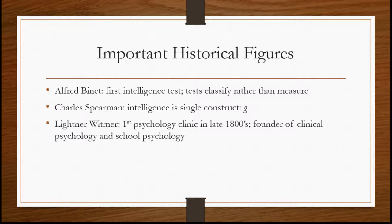I wanted to go over a few important historical figures. The first person who seems to have put together a psychological test is Alfred Binet, who worked in the Paris school system in France in the late 1800s and early 1900s. He came up with one of the very first intelligence tests, and also came up with the idea that tests classify rather than measure — the point being that a lot of the concepts we're trying to measure are very hard to quantify, so a lot of times what we're trying to do is put people into a category.